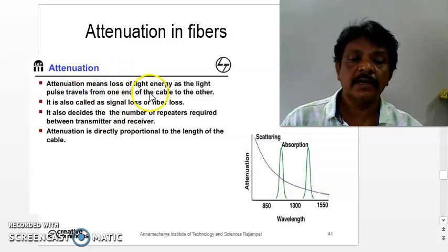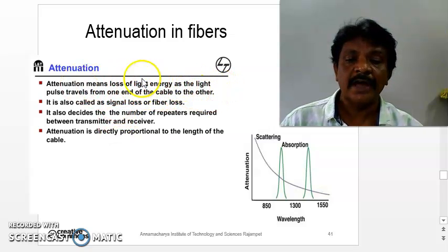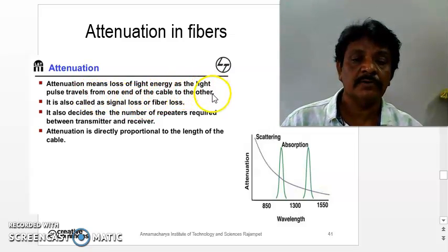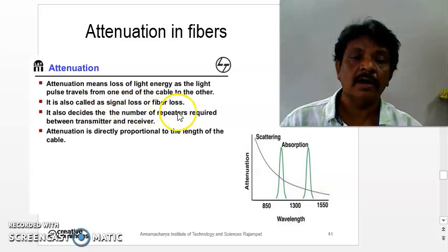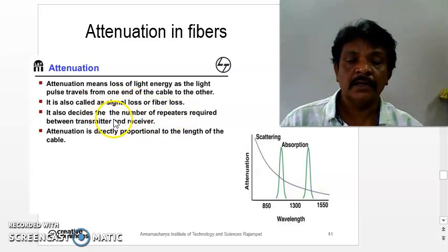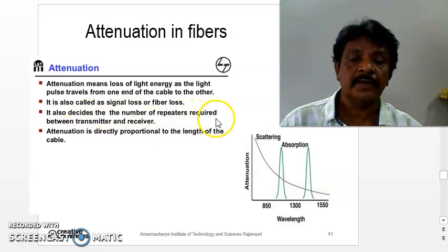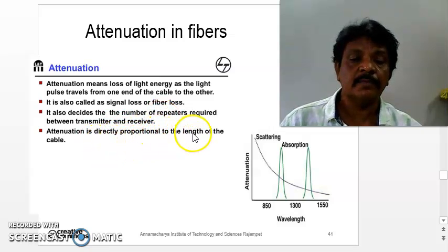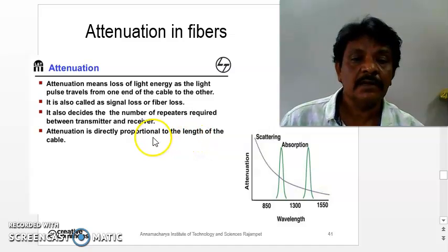Attenuation means loss of light energy as the light pulse travels from one end of the optical fiber to the other end. It is also called signal loss or fiber loss. It also decides the number of repeaters required between the transmitter and receivers. Attenuation is directly proportional to the length of the cable.